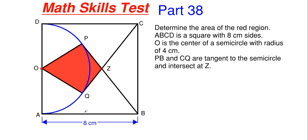Looking at what we have here, we can determine some things right off the bat. Since this is a semicircle and O is our center with a radius of four centimeters, we know right away that OP is four centimeters and OQ is also four centimeters. From the tangent line theorem, we can determine that PB is equal to AB since we have tangency coming down here and tangency over here. Anytime you have two tangent lines intersecting at a point outside of your circle, those lengths are going to be equal.